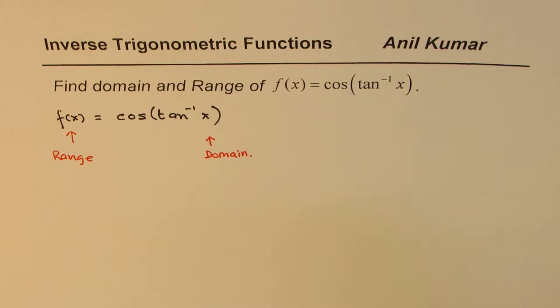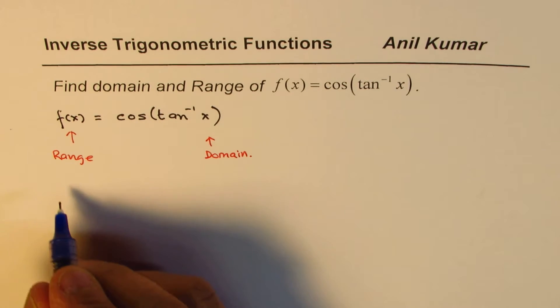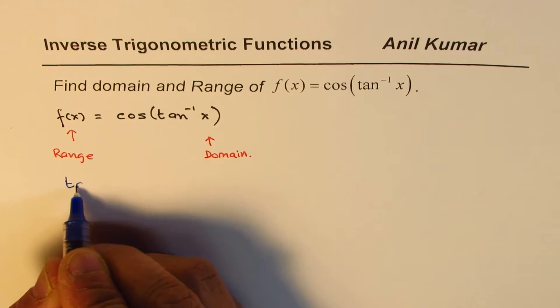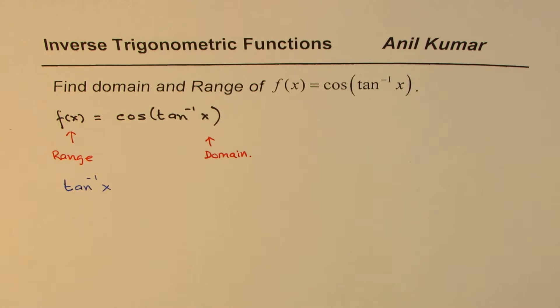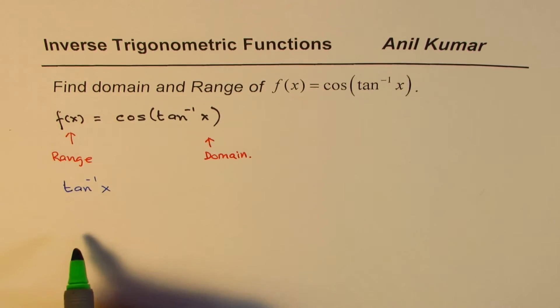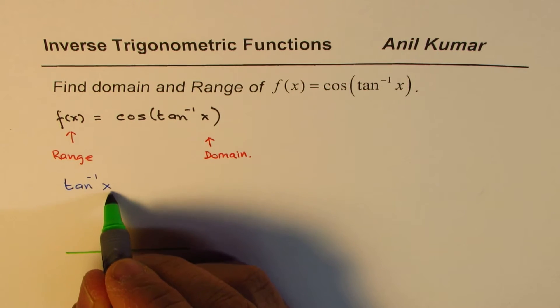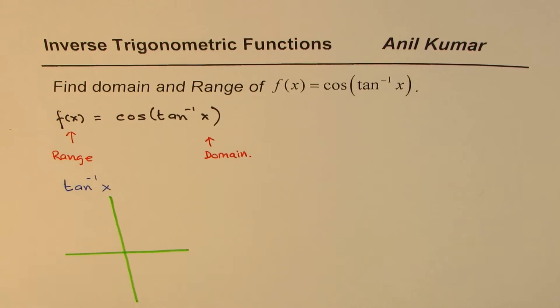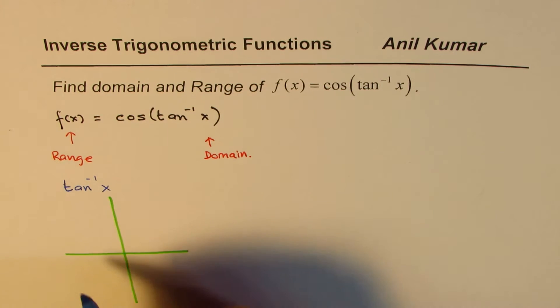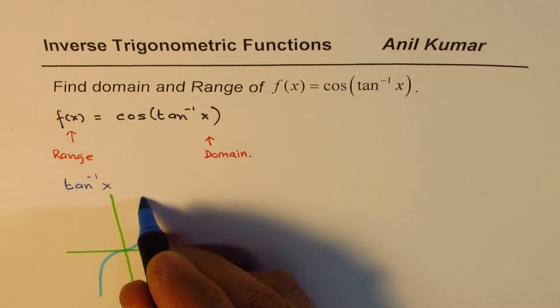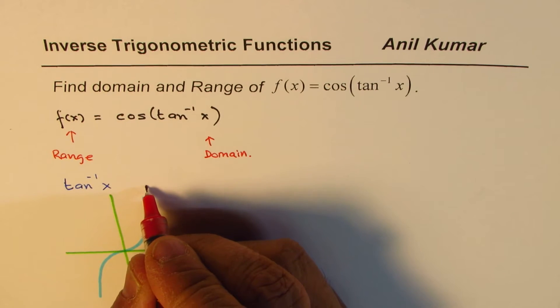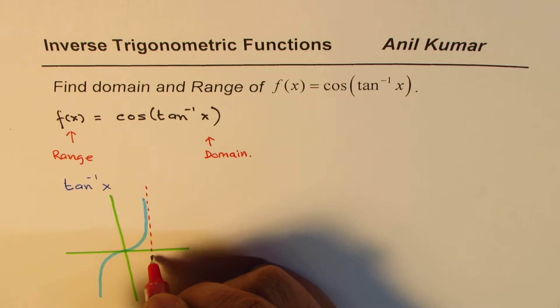Now the inside function here as you can see is tan⁻¹(x). So let's look into the inside function which is tan⁻¹(x). Tan⁻¹(x) is defined in the interval -π/2 to π/2. If I sketch this, the tan⁻¹(x) graph will be kind of like this.